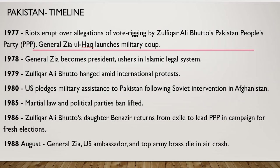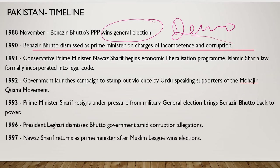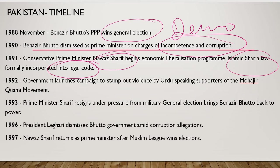In 1985, martial law was lifted and political parties were asked to participate in elections. During this period, in 1986, Benazir Bhutto came back from exile and started campaigning for fresh elections. In August 1988, General Zia, the US Ambassador, and top army brass all died in a sudden air crash. In November 1988, Benazir Bhutto's party — the Pakistan People's Party — won the general elections, and democracy returned.